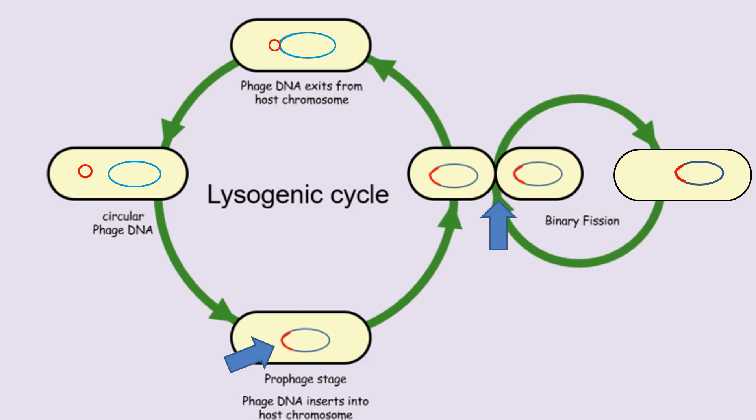During this time, not one new virus particle is made, and the host cells are completely normal and healthy. At one point, though, an environmental stimulus will induce the host to remove the prophage from its chromosome and revert it back to its circular independent form. At this point, the prophage ceases to exist, and this marks the end of the lysogenic cycle with the beginning of a new lytic cycle.